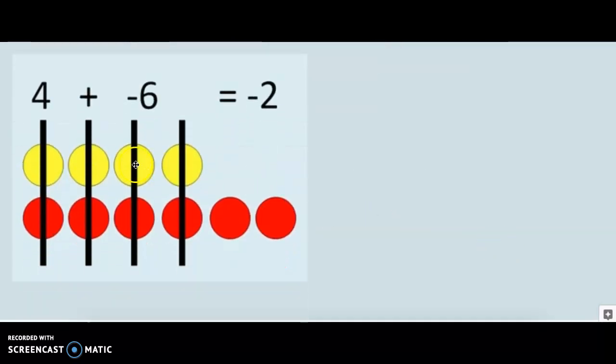Alright, so just to let you know, hopefully you've done your assignments and you've seen these counters. So, the reds are negative and the yellows are positive. When they line up like this, they cancel out.